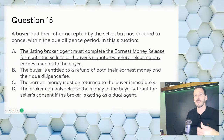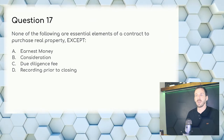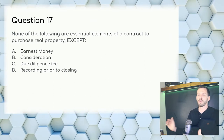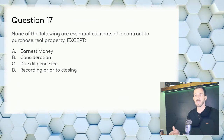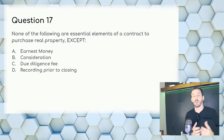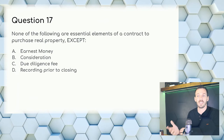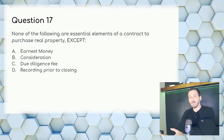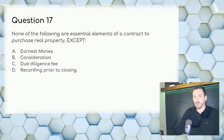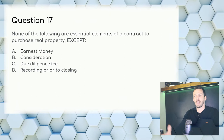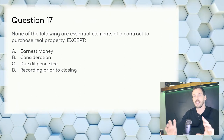Question 17: None of the following are essential elements of a contract to purchase real property except — earnest money and due diligence are elements, and recording prior to closing is mandatory for attorneys. Consideration is typical, but there are unilateral contracts where one party is not obligated. Answer: B, consideration.